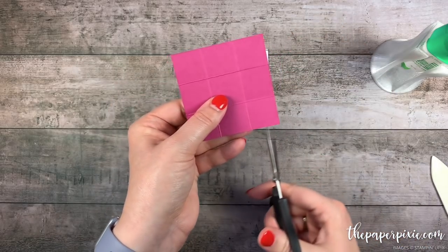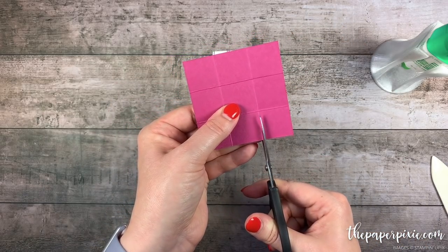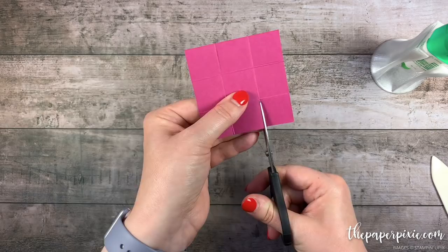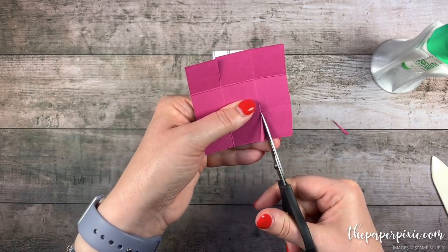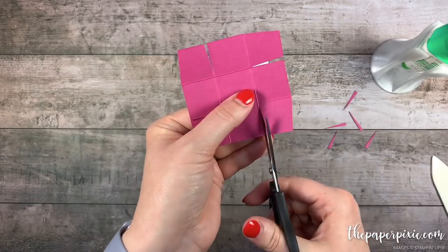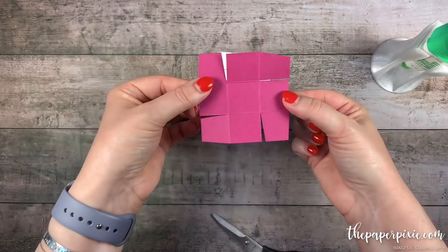I'm gonna turn it a quarter of a turn and continue to do the same thing all the way around. Then I'm going to come in and notch each of these tabs that we just created. So it looks like this.